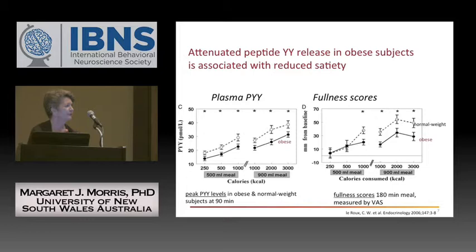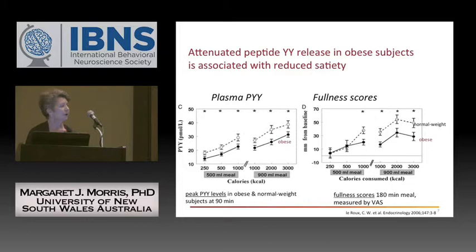In terms of obesity in humans, there's a lot of interest in what might be going wrong. This data out of the Hammersmith group shows that in obese people versus controls, there's reduced plasma levels of PYY, a hormone made from the gut that reduces food intake through hypothalamic actions. They have a lower response to a meal, and in response to this meal they report feeling less full. So obesity is a state with lower levels of an appetite-inhibiting peptide.